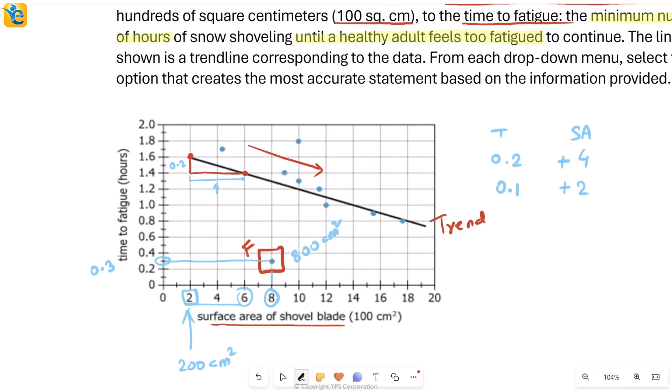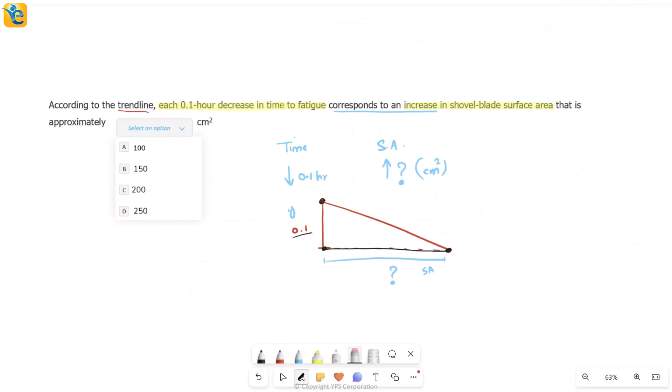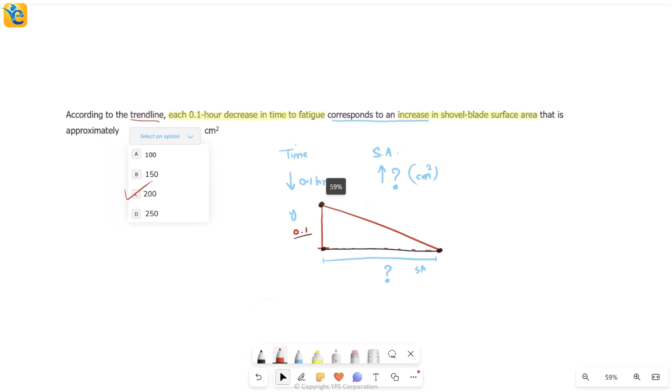Correspondingly, you can find it for 0.1 also—just maintain the same proportion. If the decrease is 0.1 in time, then surface area will be two more, two units more on the x-axis. But I know I'm reading values in 100 square centimeters, so this one here is 200 square centimeters. When I come back here, I see choice C as the correct answer.